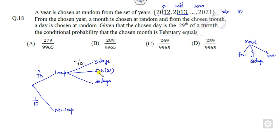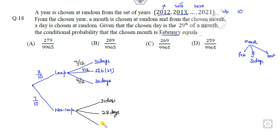Similarly for the non-leap year: months with 31 days have probability 7/12, February now has 28 days with probability 1/12, and 30-day months again have probability 4/12. Note that there is no month with 29 days in a non-leap year — February is considered as 28 days.